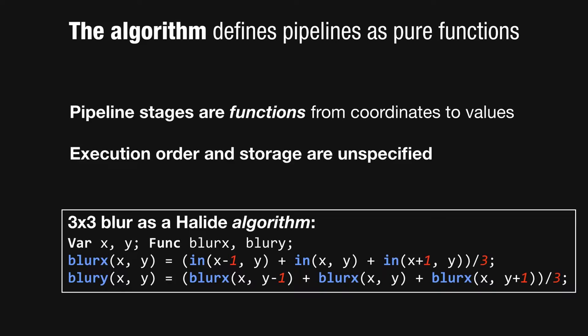The execution order and storage of these operations are unspecified, so points in these functions can be evaluated in any order. The results can be cached, duplicated, thrown away, or recomputed without changing the meaning. You'll see more details on this algorithm language in the code examples. But the key point is that where in C we'd write loops, in Halide we write pure functions in terms of free variables over their domain and the evaluation of other functions.